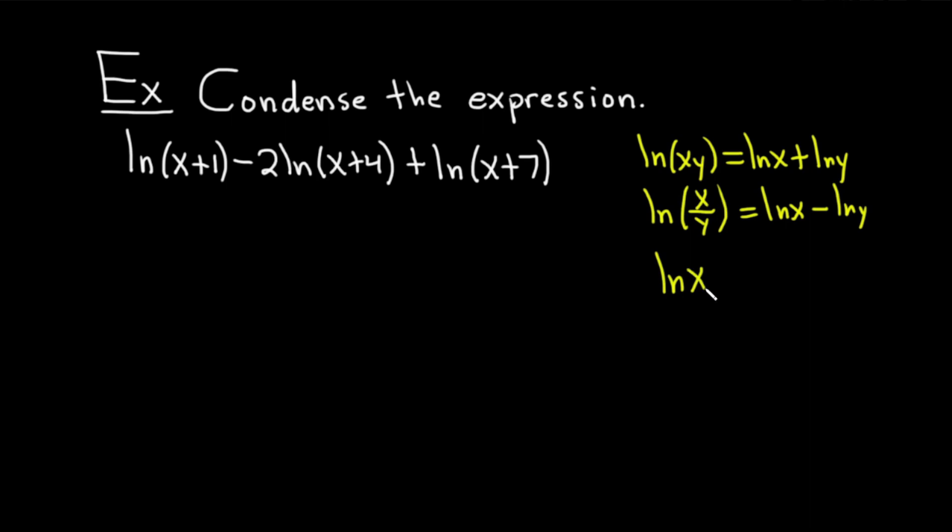And if you have the natural log of x to the p, that's equal to p times the natural log of x. That's the power rule. So these are the laws of logarithms. And in this problem, we're going to use every single one of them.